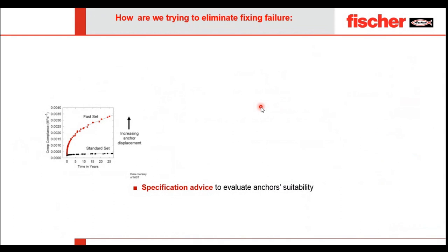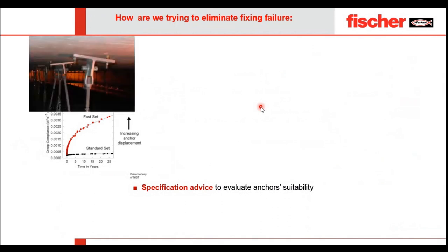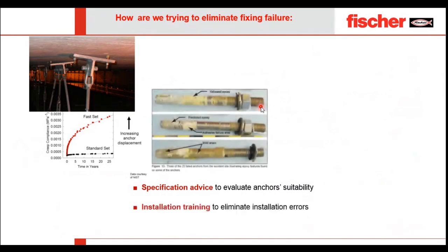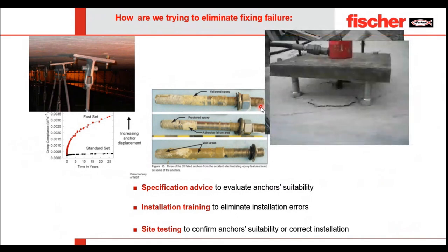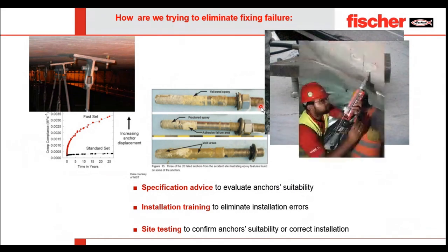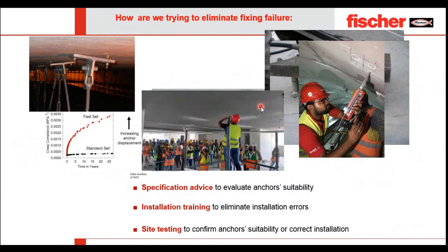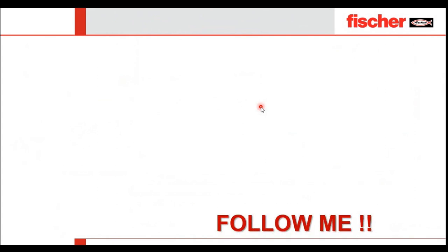How does Fischer help eliminate fixing failures? First, we provide specification advice to evaluate anchor suitability and design calculations for our customers to ensure the proposed anchor is suitable for the application. Second, we ensure installation training is carried out on your site to achieve zero installation errors. Third, we perform site testing — such as pull-out tests — to confirm the proposed anchor takes the required load.